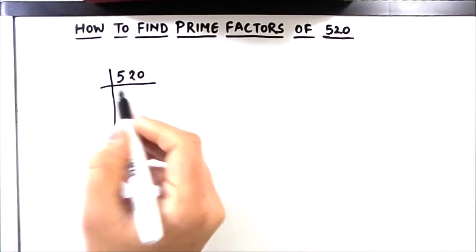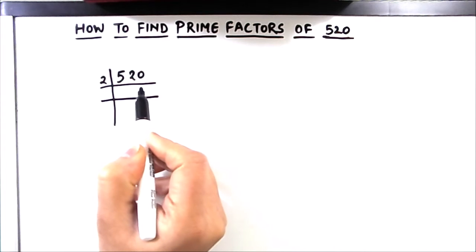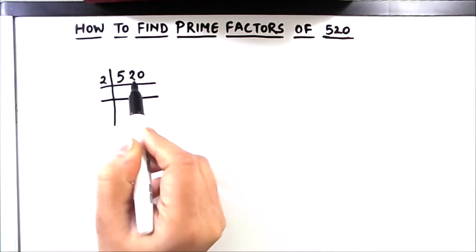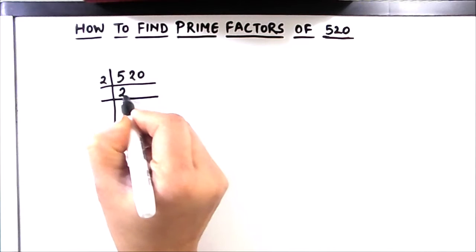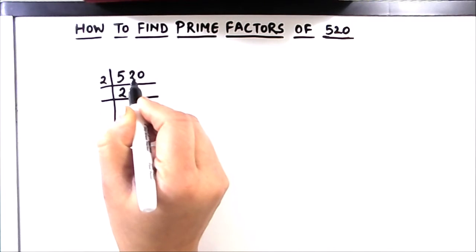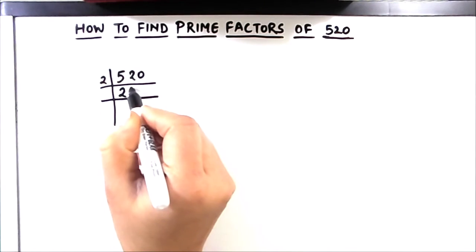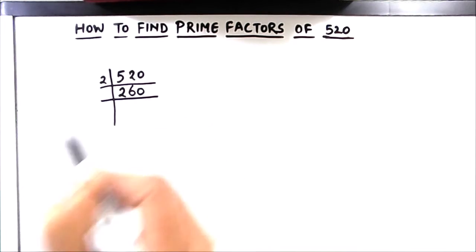So as this is an even number, it can easily be divisible by first prime number which is 2. So 2 times 2 is 4, 1 is carried over, this becomes 12, 2 times 6 is 12 and 2 times 0 is 0.